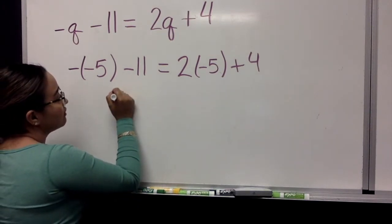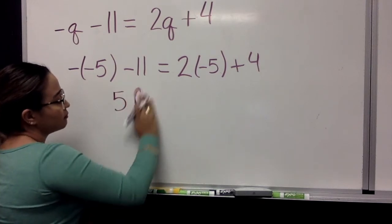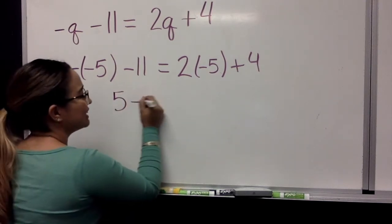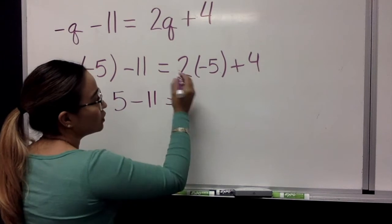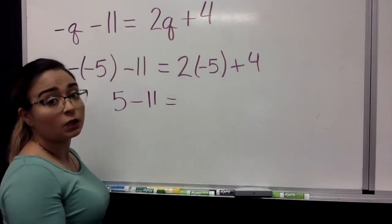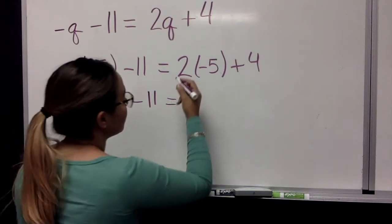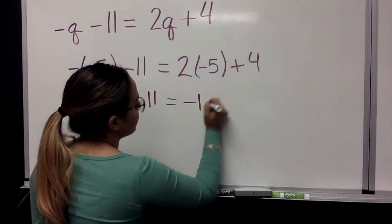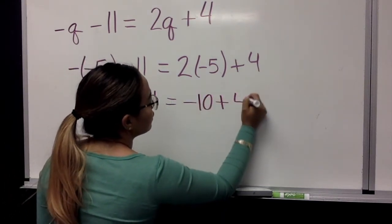So we have 5 minus 11 equals, what's 2 times negative 5? A positive and a negative. So our answer will be negative 10 plus 4.